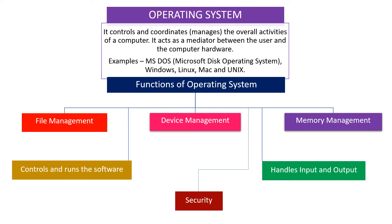Some examples of operating systems are MS-DOS (Microsoft Disk Operating System), Windows — the one we are all using — Linux, Mac, and Unix. These are some of the examples of operating systems.